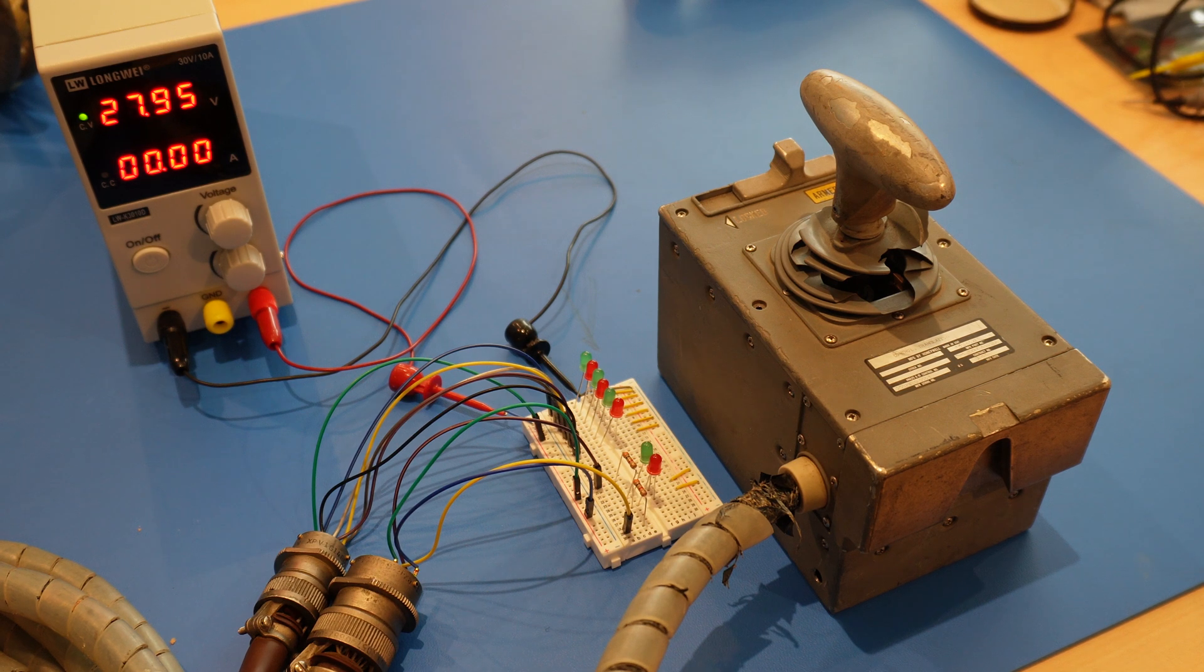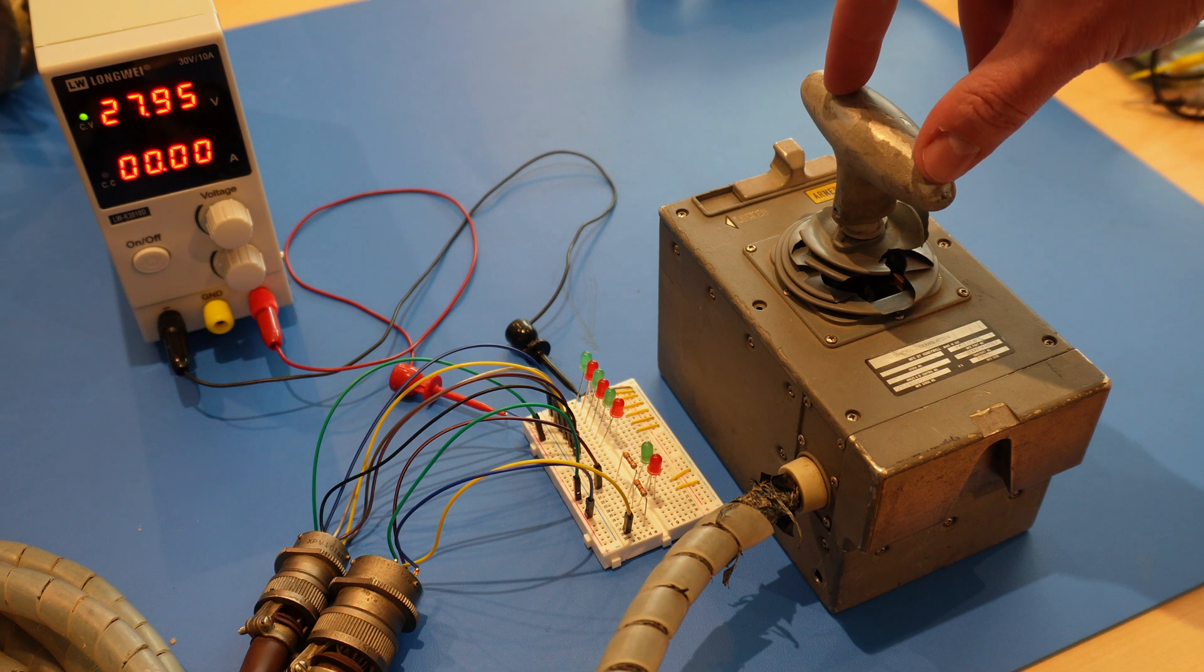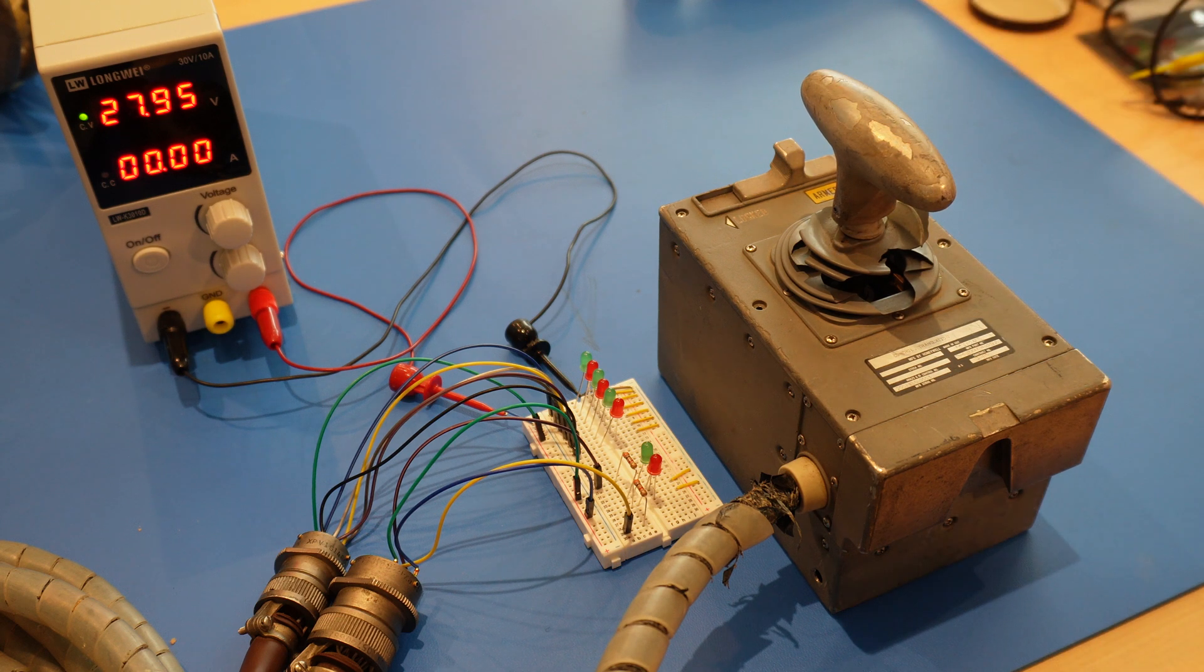So the question came up the other day of if the translational hand controller in the command module is restricted to one axis at a time, or if you can actuate all three axes at the same time.